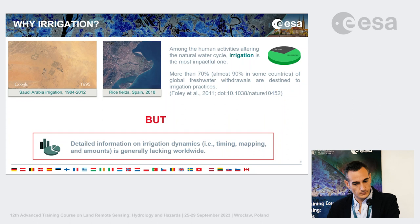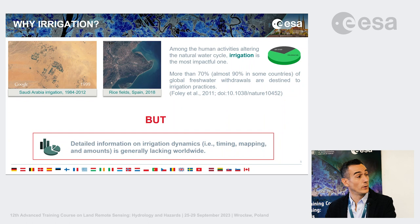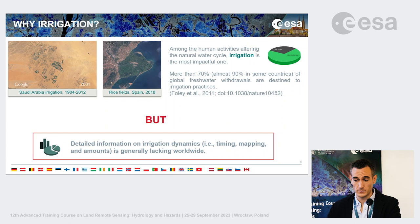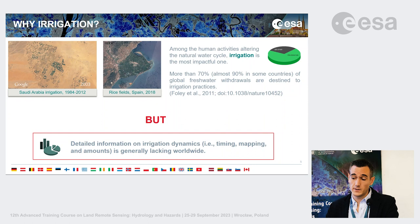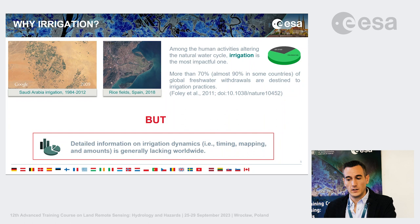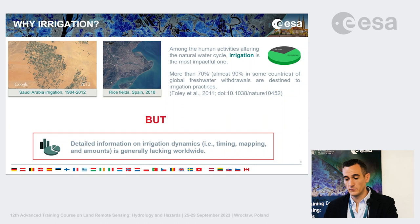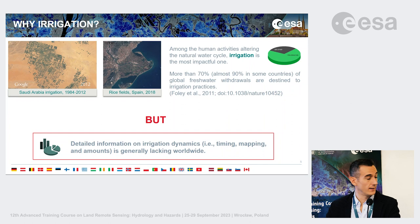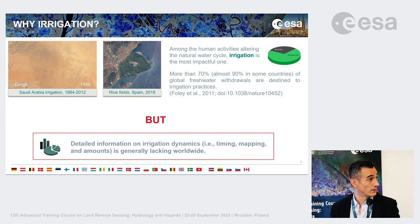Why focus on irrigation specifically? Because among all human activities that alter the natural water cycle, irrigation is the most impactful. More than 70% of global freshwater is used for irrigation — in some countries this reaches 90%. Despite this, we basically don't have information on irrigation dynamics: when irrigation happens, where it happens, and how much water is used — which is critically important from a water management perspective.